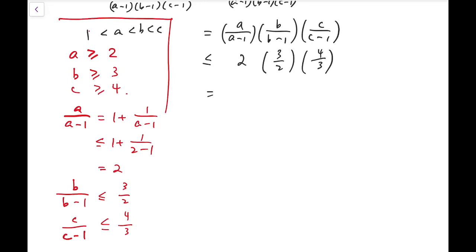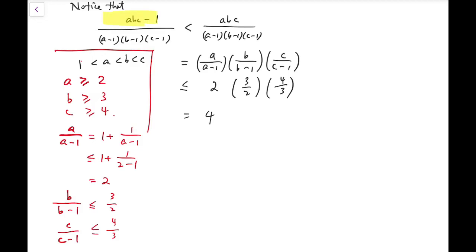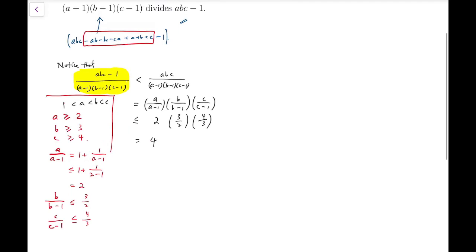Oh sorry, it's a mistake — it should be 4 instead. So because this expression is strictly less than 4, and we know it cannot equal 4 because there is a strict difference between the two expressions, that means the quotient can only be 2 or 3. So we have reduced the number of possibilities from all natural numbers to just two: 2 or 3. And it should be very easy to handle.